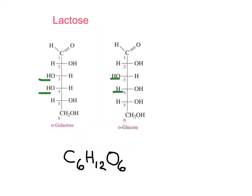The disaccharide lactose is made of one unit of galactose and one unit of glucose. Before forming the disaccharide, it is important to look at the differences between these two monosaccharides — they are epimers. The difference is the orientation of the OH on carbon number four: the OH is to the left in galactose and to the right in glucose.